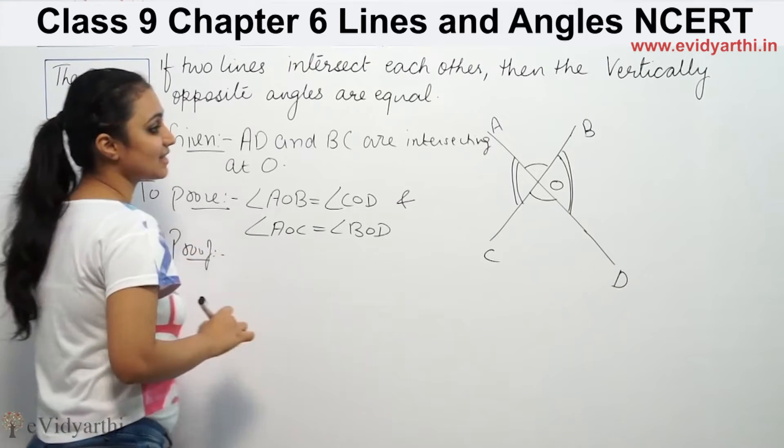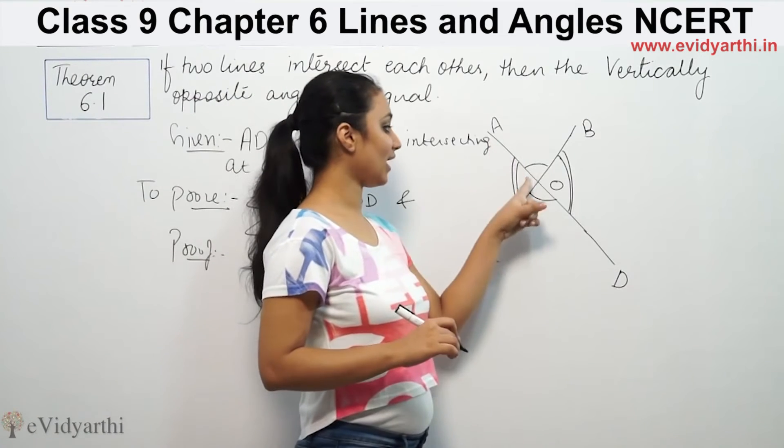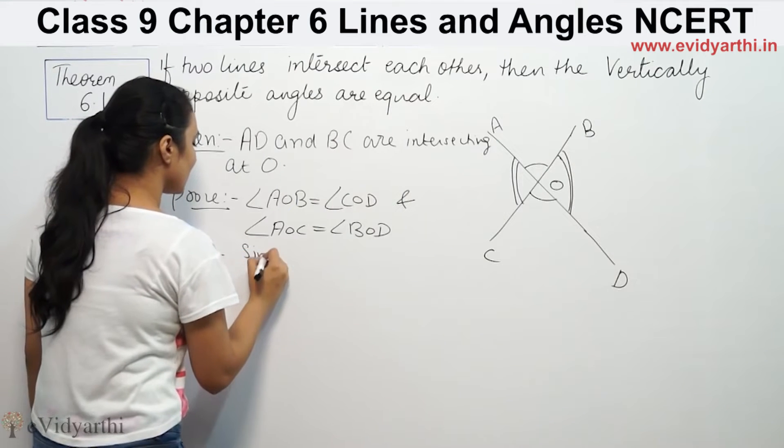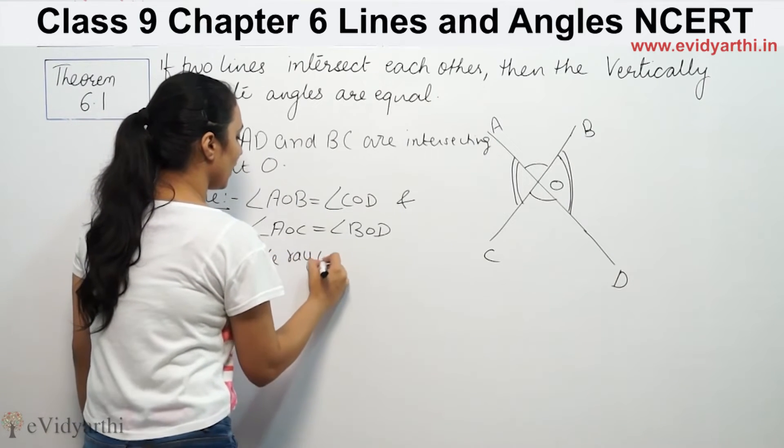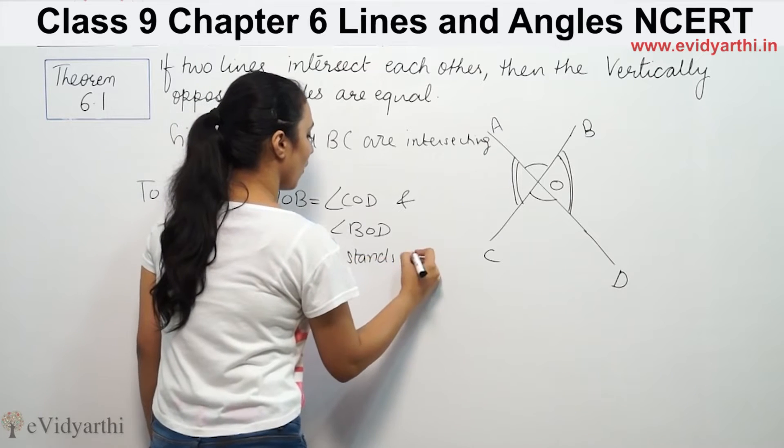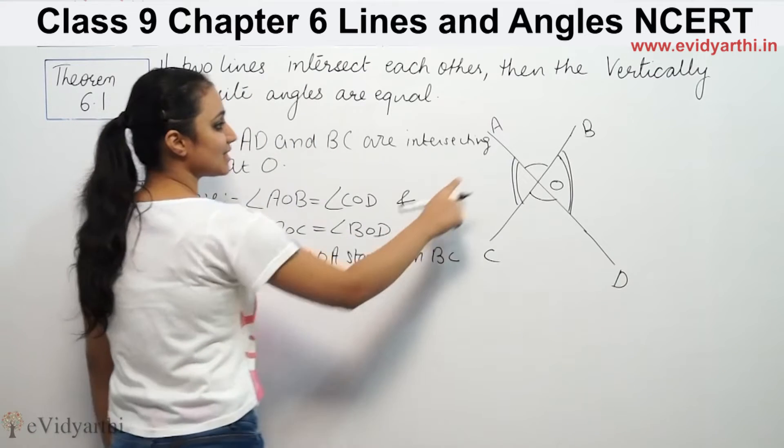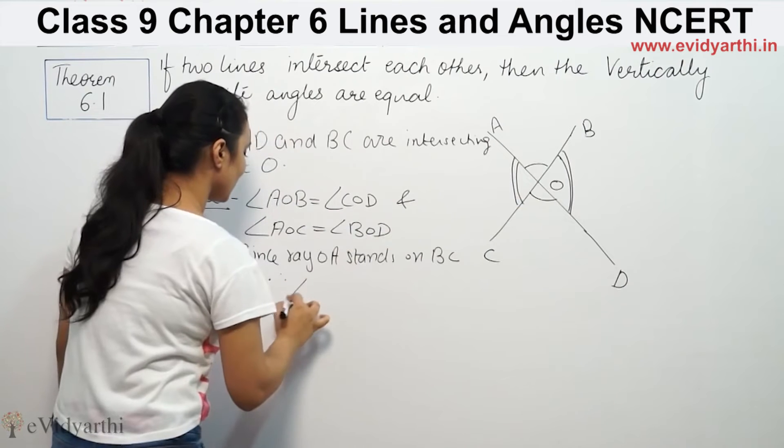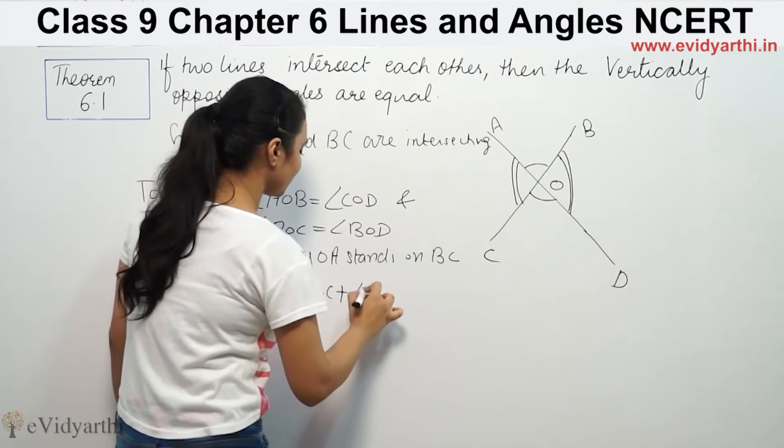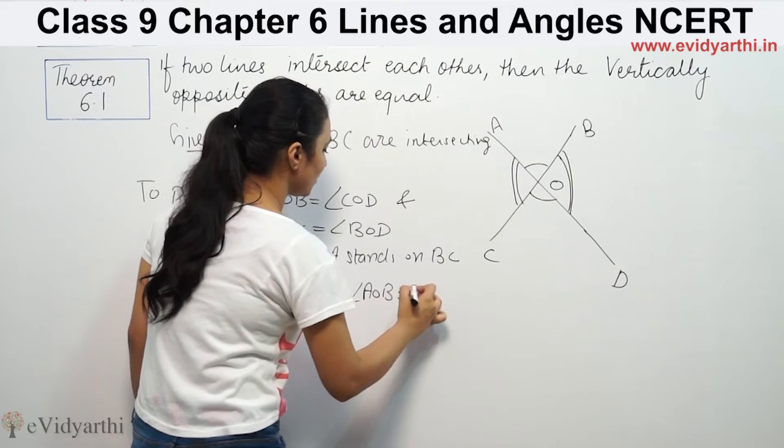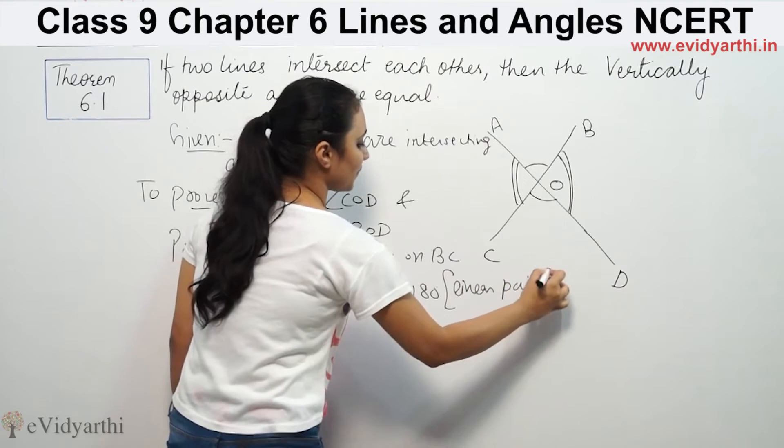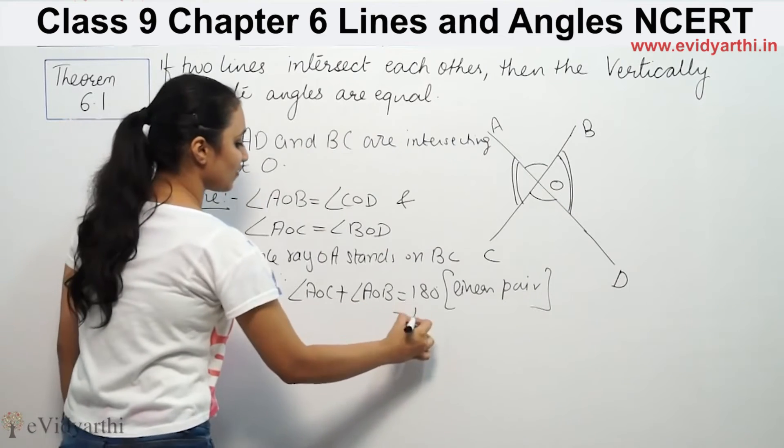Since OA stands on BC, therefore angle AOC plus angle AOB equals 180 degrees by the linear pair axiom. This is our first equation.